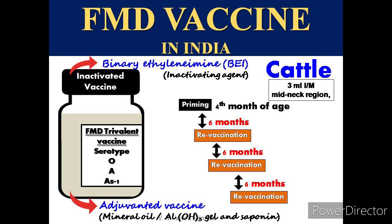FMD vaccine in India: An inactivated trivalent vaccine for serotypes O, A, and Asia 1 is used. Inactivation is done using BEI (binary ethylene imine). Adjuvants used include mineral oil or aluminium hydroxide plus saponin. The primary vaccination in cattle and buffalo is done at 4 months of age, with a dose of 3 mL per animal intramuscularly at the mid-neck region. Revaccination is done every 6 months to maintain protective immunity.